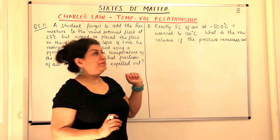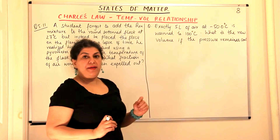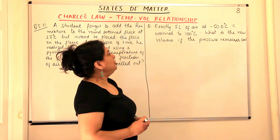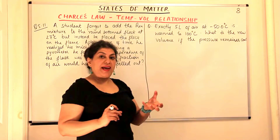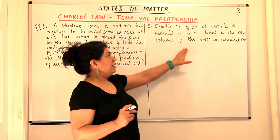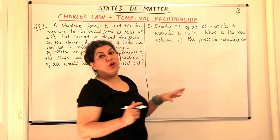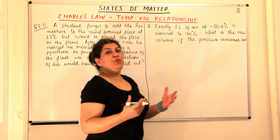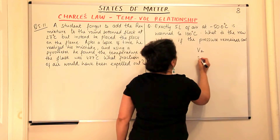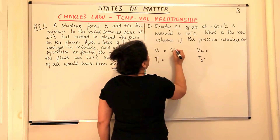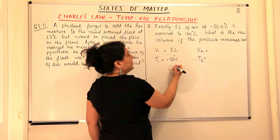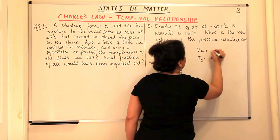Now we have the second problem. Exactly 5 liters of air at minus 50.0 degrees Celsius is warmed to 100 degrees Celsius. What is the new volume if the pressure remains constant? We are taking a certain amount of gas, so the number of moles is fixed. We are changing the temperature, pressure is constant, and we have to see the change in volume — so we are using Charles Law. We need V1, T1, V2, and T2. V1 is 5 liters, T1 is minus 50 degrees Celsius, T2 is 100 degrees Celsius, and V2 is required.